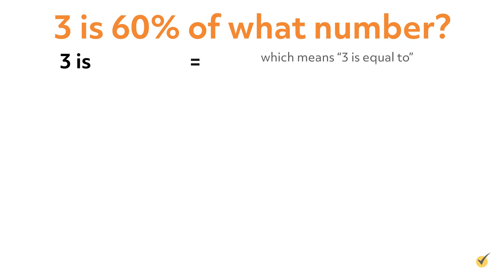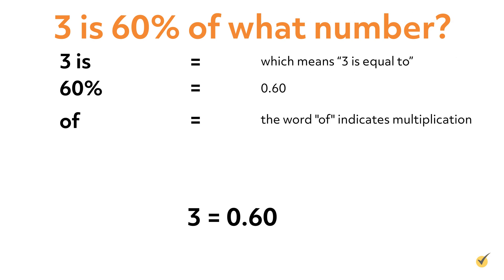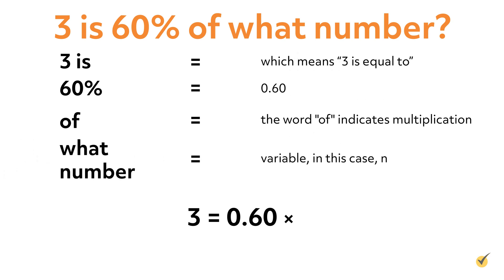The question starts with '3 is,' which means 3 is equal to. Start the equation with 3 and an equal sign. The next part is 60%. Since 60% equals 0.60, write 0.60 after the equal sign. The next word is 'of,' which indicates multiplication, so write a multiplication sign after 0.60. The next part is 'what number?' — since we don't know this number, use the variable n. When multiplying a number by a variable, no multiplication sign is needed; write the coefficient 0.60 next to the variable n.